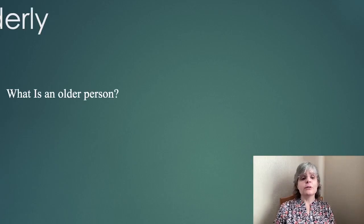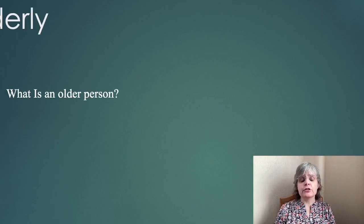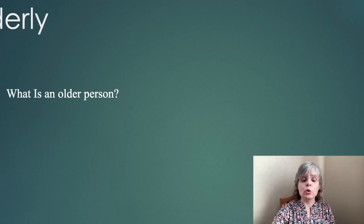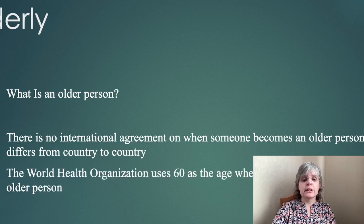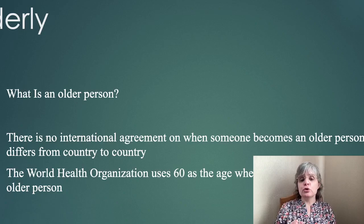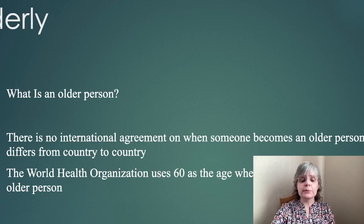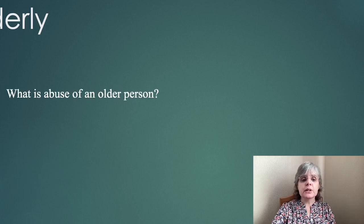What is an older person? There's actually no agreed upon definition about when someone would be considered an older person. It differs from country to country, so there's no international agreement. The World Health Organization uses 60 as the age when someone would be considered an older person.